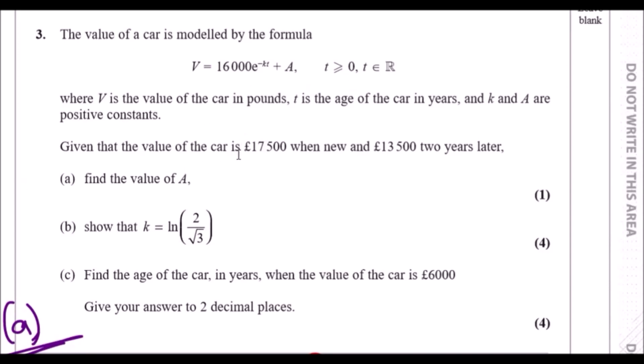Given that the value of the car is £17,500 when new—keyword 'new' means when the time is zero, when it's fresh off the bat—and £13,500 two years later, so when t is 2 at this valued price, find the values of a and show that k is this.